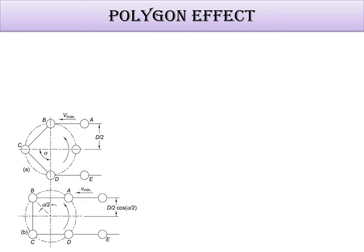With four teeth, the sprocket rotates with an angle alpha. The radius is d/2, and when the sprocket teeth are in the polygon shape a-b-c-d, this distance becomes d/2 multiplied by cos(alpha/2).